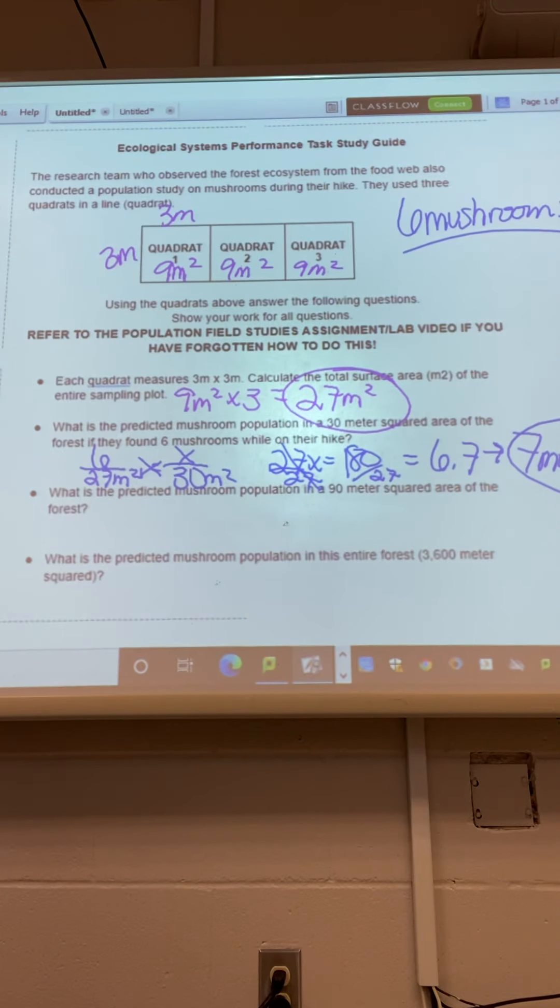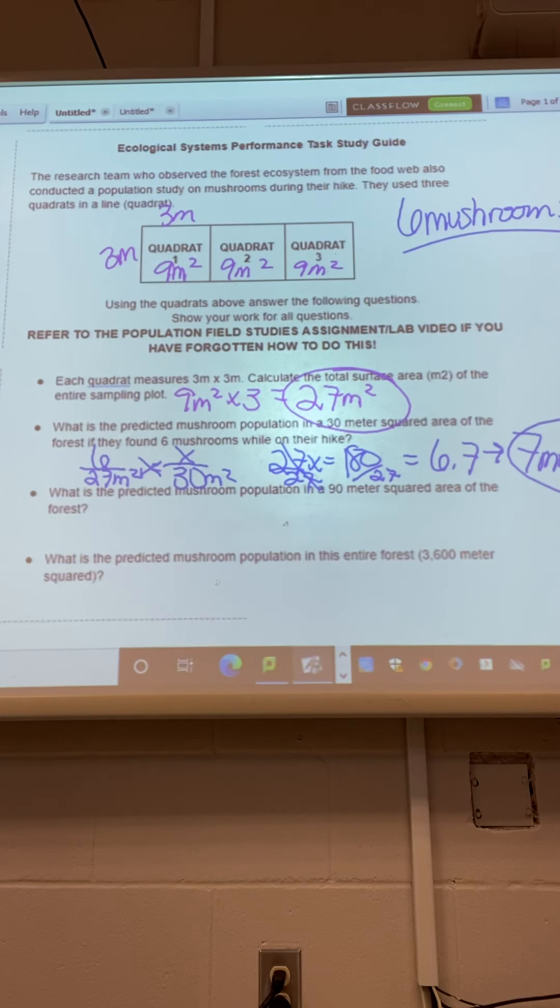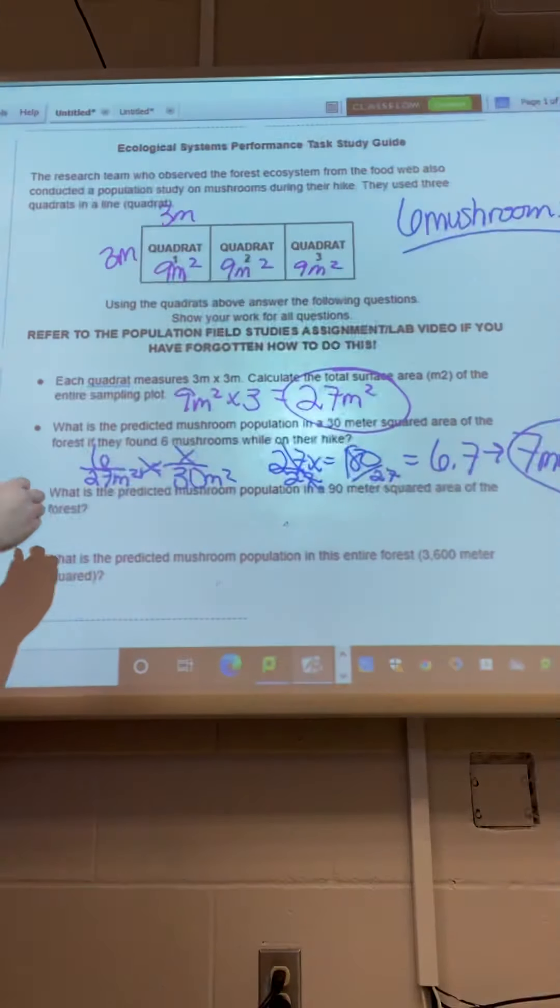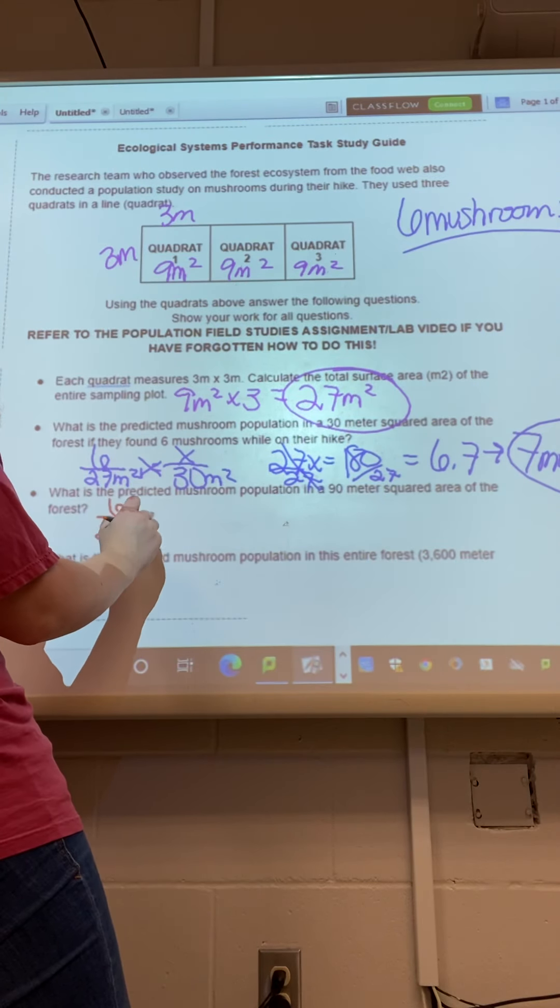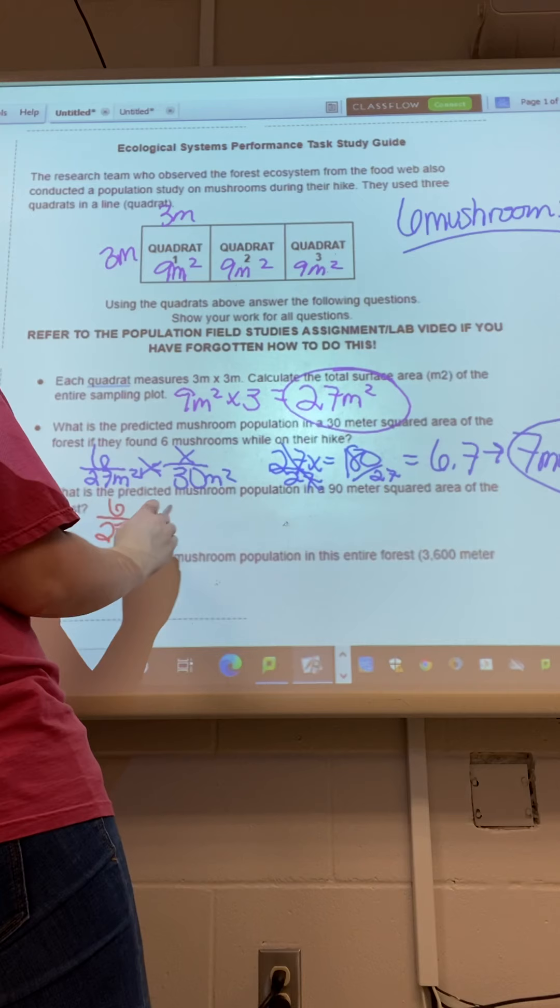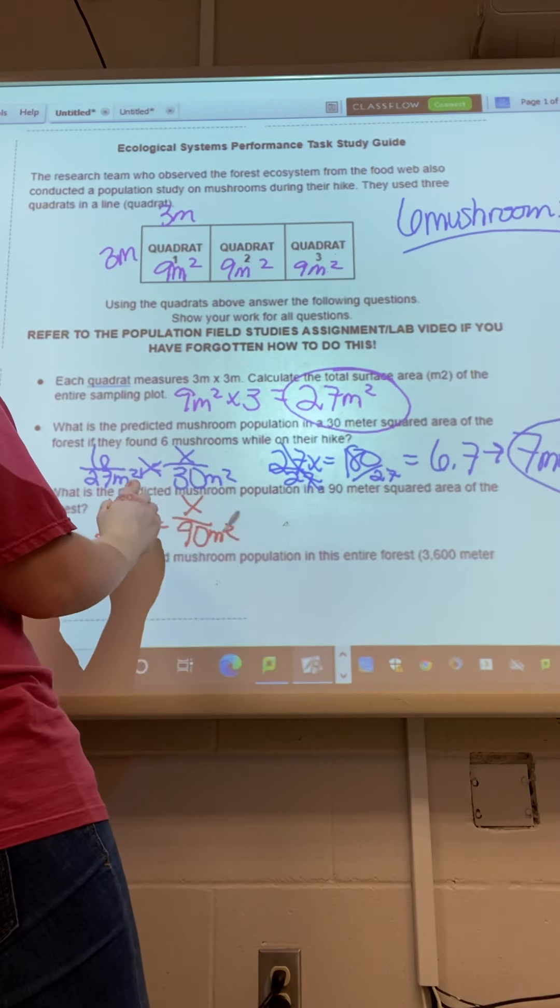Okay. So then what is the predicted mushroom population in a 90 meter squared area of the forest? So if we had 6 to 27 meters squared, and we're going to set that equal to x over 90 meters squared.